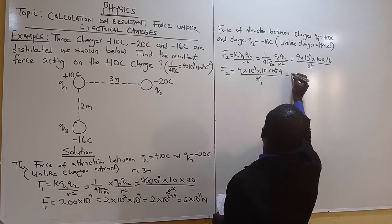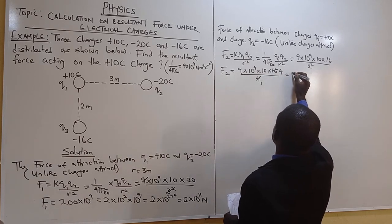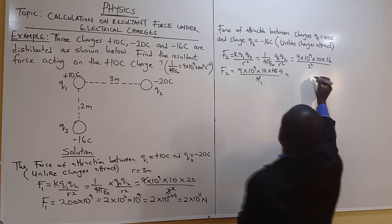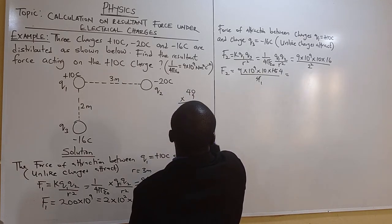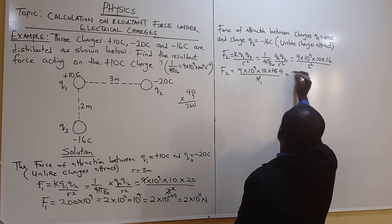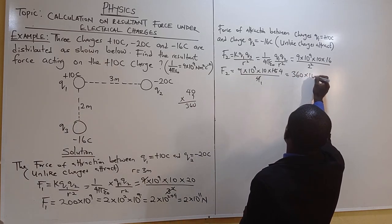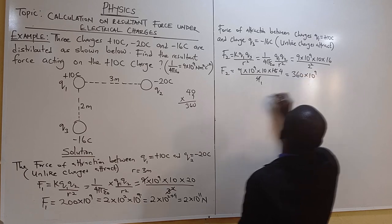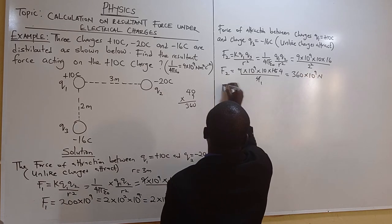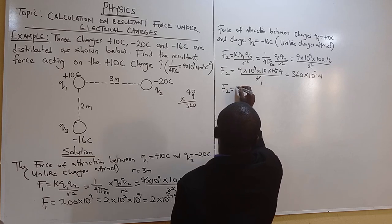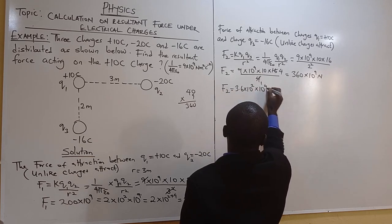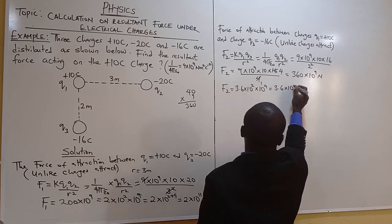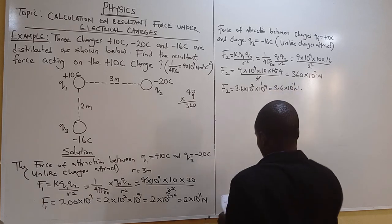Doing the cancellation: 4 divides into 4, leaving 1. So we have 9 times 40 equals 360. That gives 360 times 10 to the power 9, which shifts to 3.6 times 10 to the power 11 Newtons. This is F2.